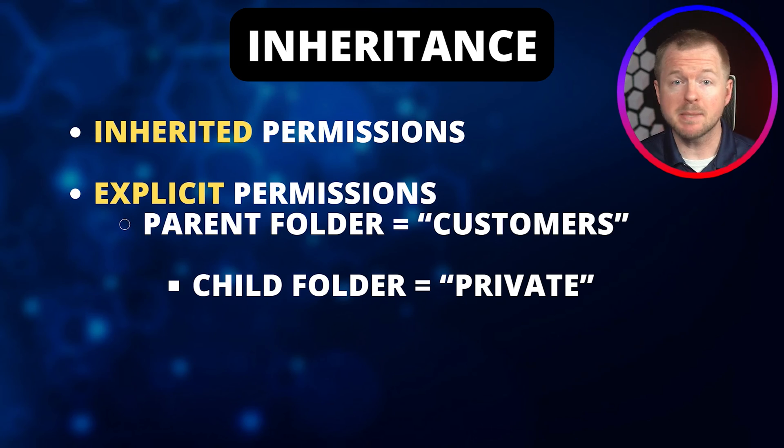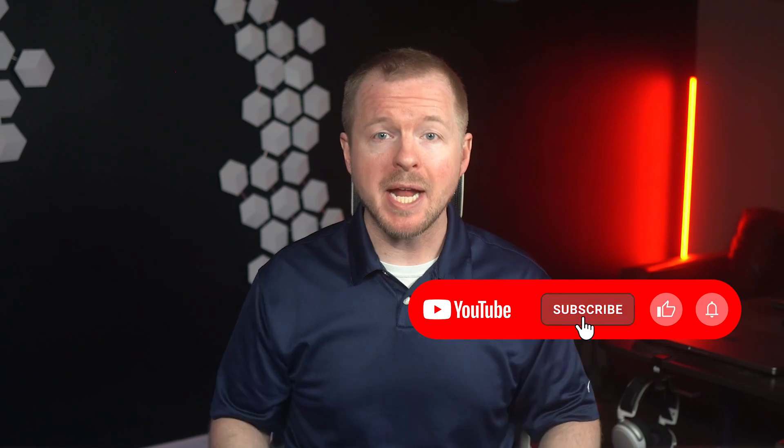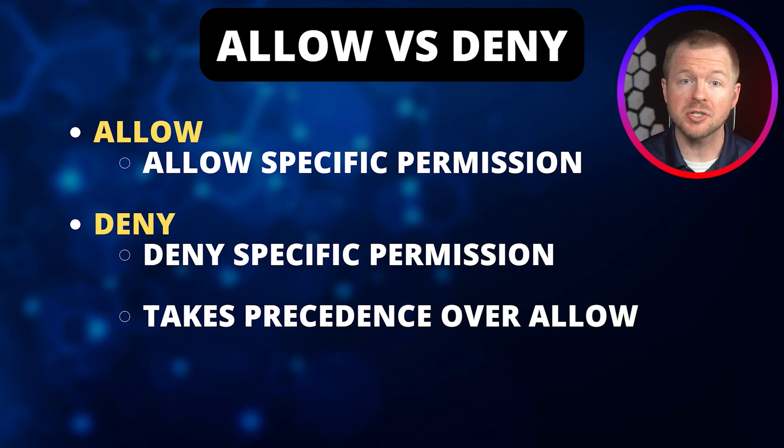If you apply specific permissions to a folder on your computer, that folder is the parent folder, and files and folders inside it become children that can inherit permissions from that parent. Alternatively, you can apply explicit permissions on a folder so that anything inside doesn't inherit those same permissions. For example, you might have a folder called Customers that anyone in the company can read, and a child folder called Private with social security numbers that only specific people can access. You can allow read permissions but deny the ability to write or modify files. A deny rule takes precedence over allow rules — if you have a deny and an allow rule for the same thing, the permission will be denied.